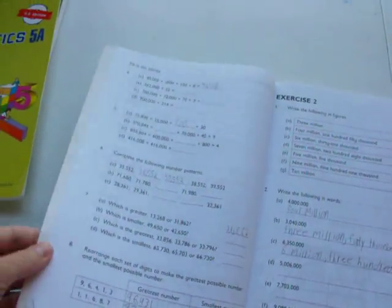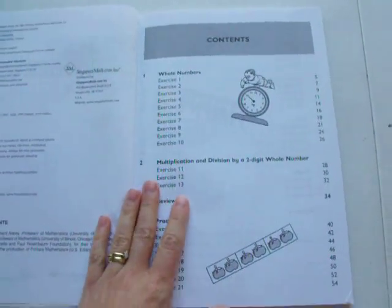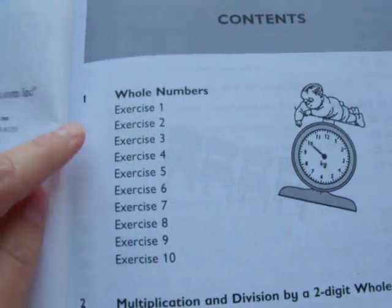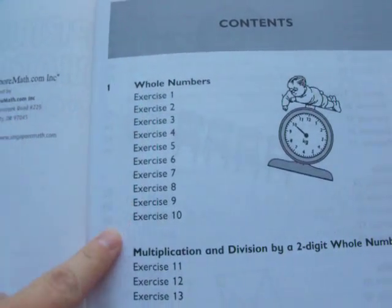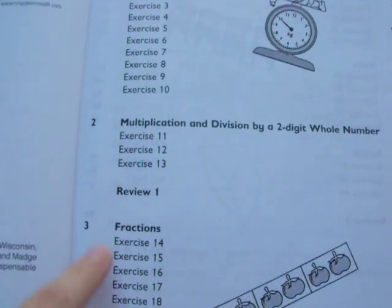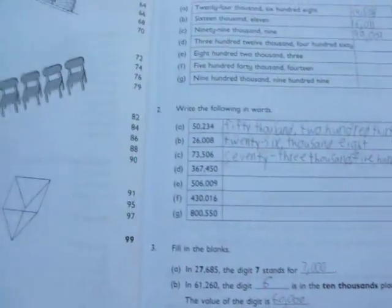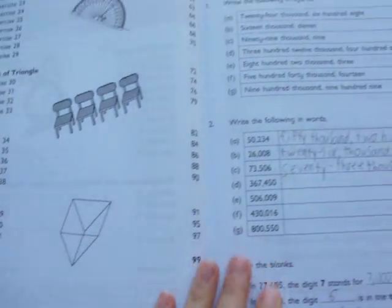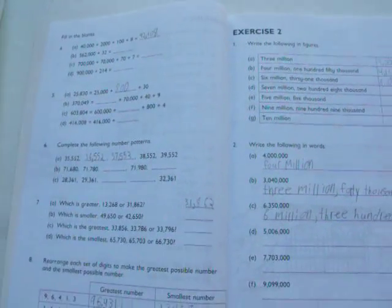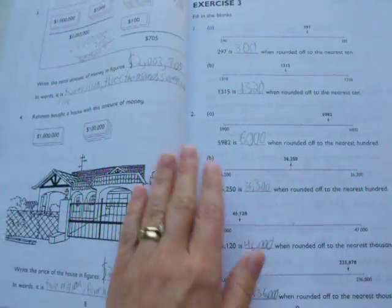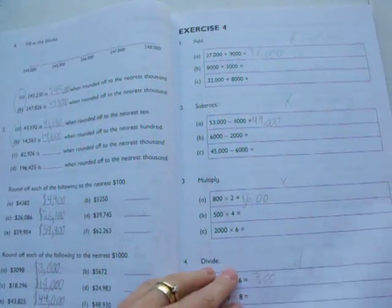And the workbook. You can see it also has a table of contents into the units, like unit ones over whole numbers. And these are the exercises in each unit. It just numbers them. And then there's a review. And that's just how that table of contents is set up. And the workbook is just black and white, at least in the U.S. edition anyway. The textbook had a little bit of color to it.